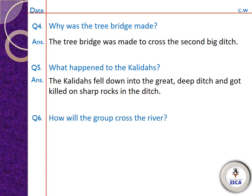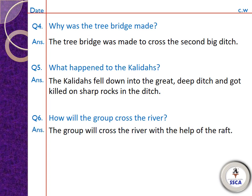Question number 6: 'How will the group cross the river?' — Group river ko kaise cross karega? Jab second big ditch cross karne ke baad river aati hai, scarecrow idea deta hai. Its answer is: the group will cross the river with the help of the raft. Group raft ki madad se river ko cross karega.